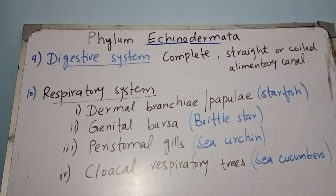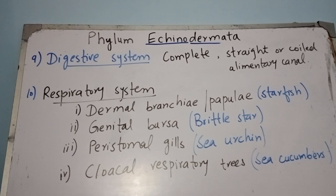Respiration in echinoderms occurs through different organs. It may occur through dermal branchia (also known as papulae), present in starfishes. In brittle stars, genital bursae serve as respiratory organs. Peristomal gills are found in sea urchins, and in sea cucumbers there are cloacal respiratory trees. Thus a number of different respiratory organs are present in echinoderms through which gaseous exchange takes place.